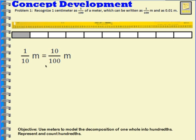I can also write this as a decimal. This way. That one-tenth of a meter is equal to ten hundredths of a meter. And I read this the same way I read this fraction. Because they're saying the same thing.